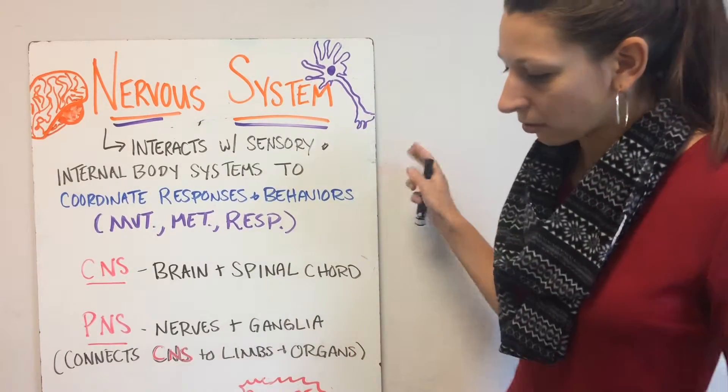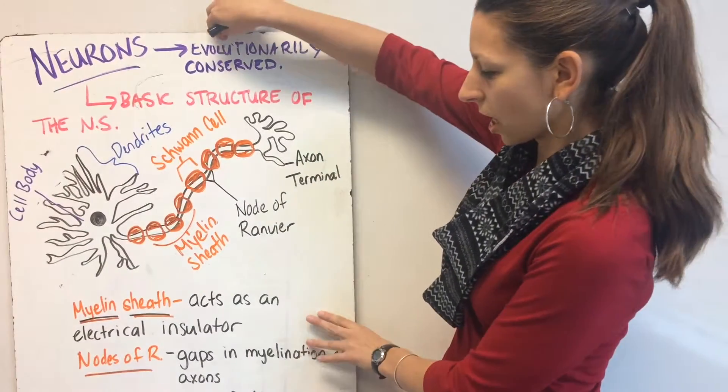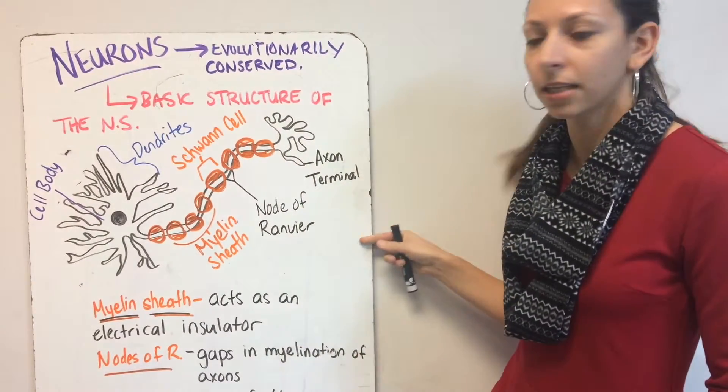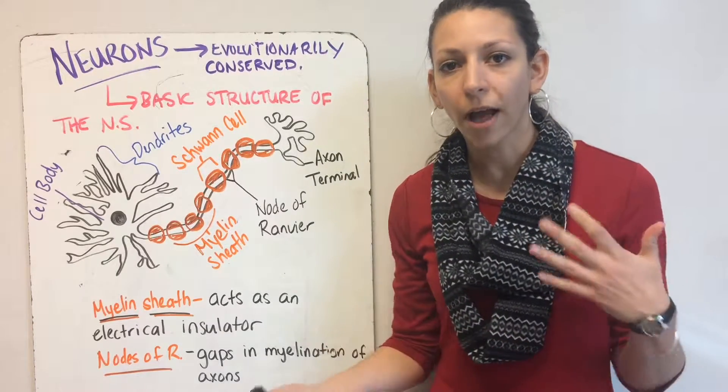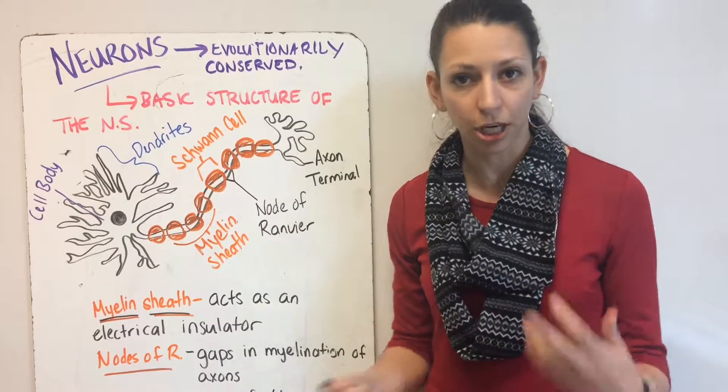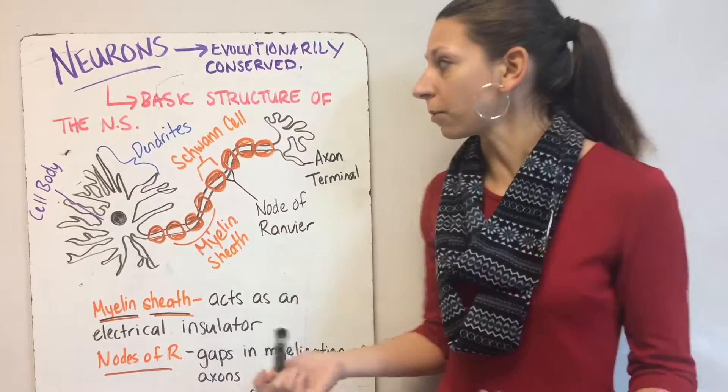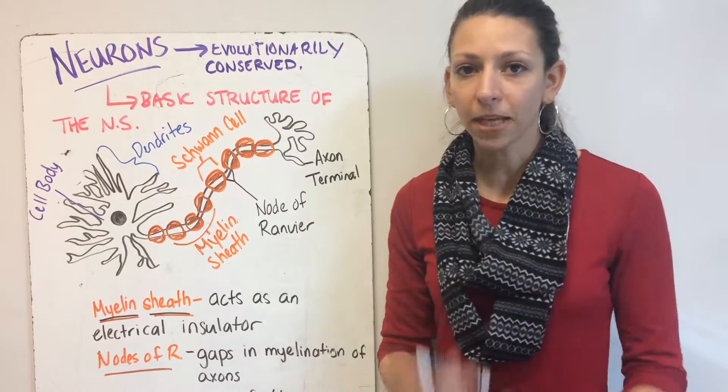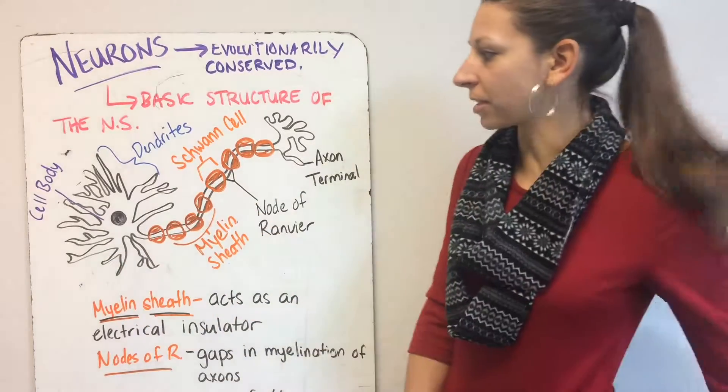Let's talk about the basic functional unit of our nervous system, which is our neuron. Neurons show how parts of our nervous system are evolutionarily conserved over many different species because they're pretty much the same in all animals. The neuron is the basic structure of the nervous system.